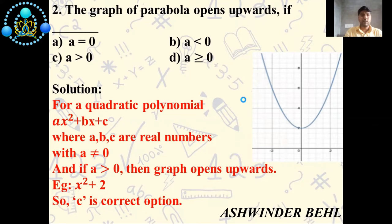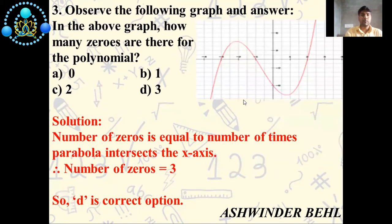Now we will discuss third question. Observe the following graph and answer: In the above graph, how many zeros are there for the polynomial? Zero, one, two, or three. Solution: number of zeros is equal to the number of times parabola intersects the x-axis. Therefore, the number of zeros is 3.